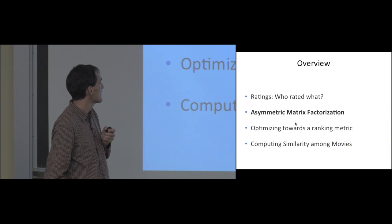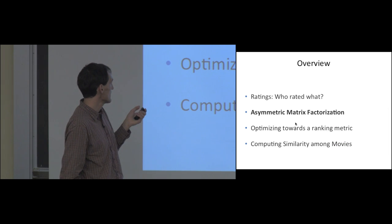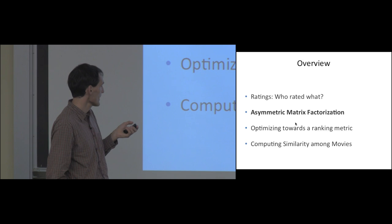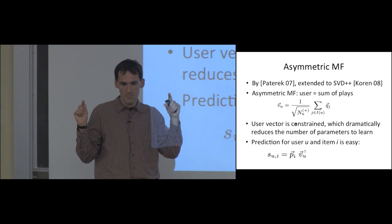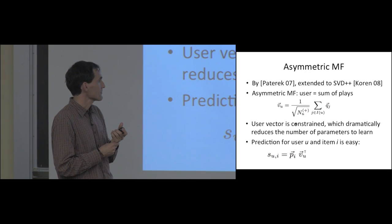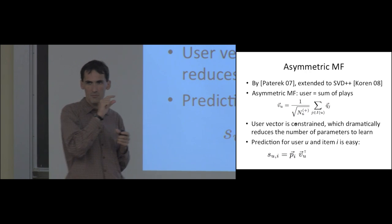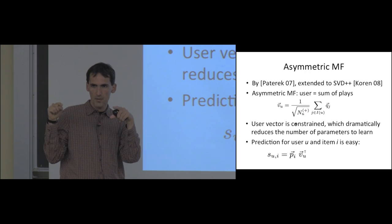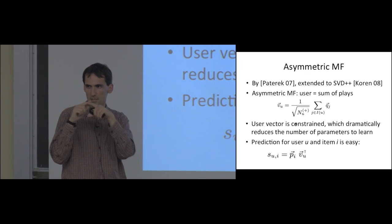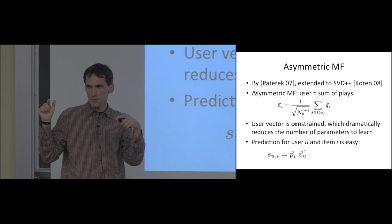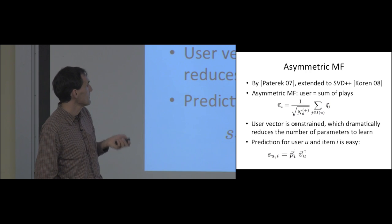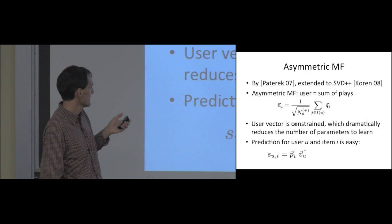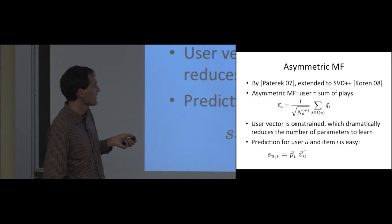Let's go to the next part: asymmetric matrix factorization. We have a very long and thin matrix — many users but not so many movies. The problem in the previous factorization is that we have to estimate many parameters for the user low-rank part: for half a million users with 50 dimensions, that's 25 million numbers. One way to reduce this is to express the user vector as a sum of latent vectors of items the user has actually played or rated.